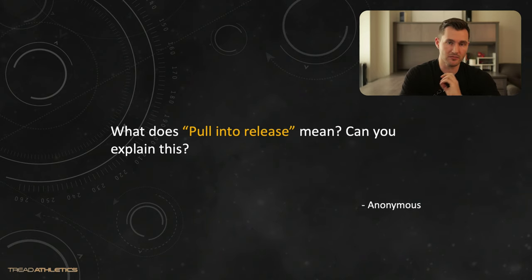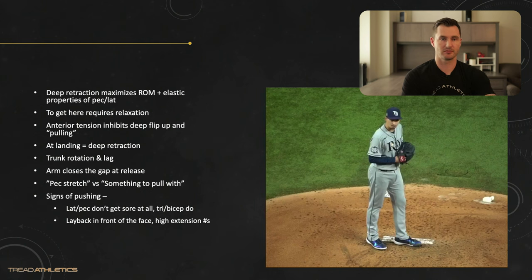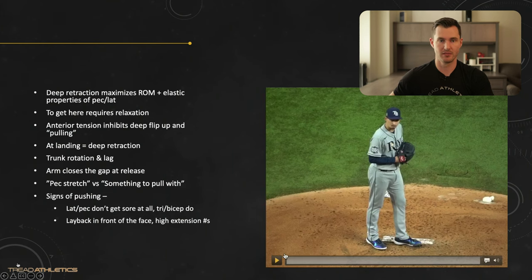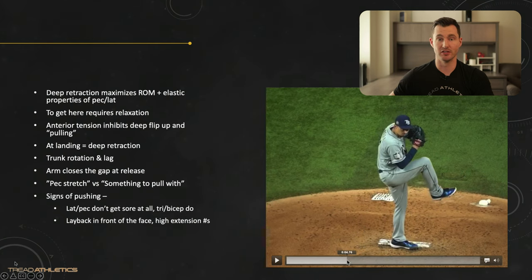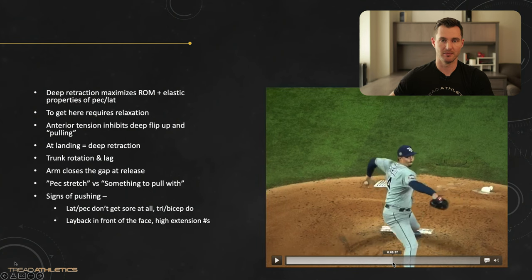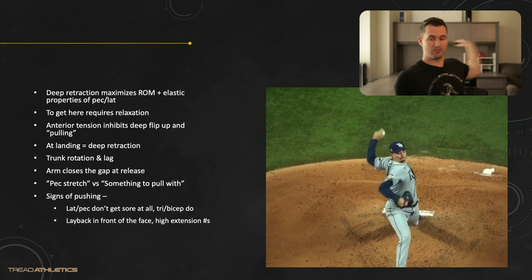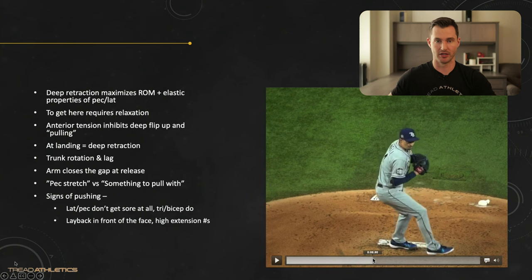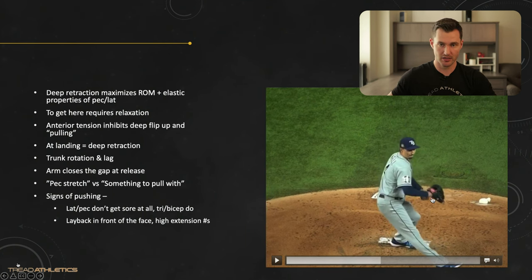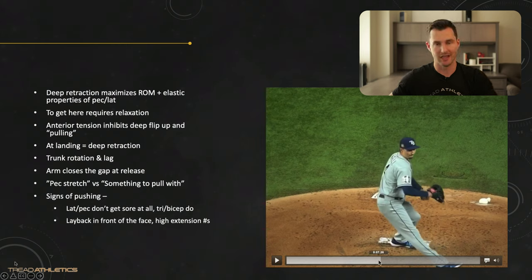Final question: what does pulling into release mean? First thing to point out — pulling into release is a feel. When an athlete gets into good scap retraction, what it feels like from that point to ball release is that you have something to actually pull with through your chest. The athlete has to be able to let the arm freely pendulum along the plane by relaxing everything on the anterior side of the shoulder — relaxing the pec, the anterior delt — so he's not building up tension in those muscles.